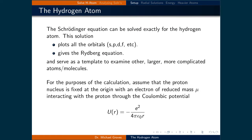The Schrödinger equation can be solved exactly for the hydrogen atom. The solution quantifies all the orbitals familiar to any chemist — the s, p, d, f orbitals, and so forth. It also returns the empirically determined Rydberg equation, just like the Bohr model of the hydrogen atom did. It also serves as a template to examine other larger, more complicated atoms and molecules.